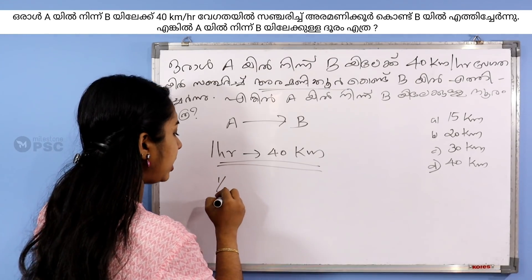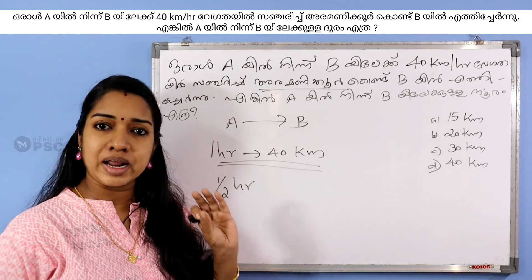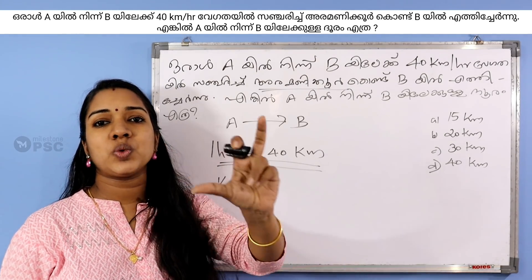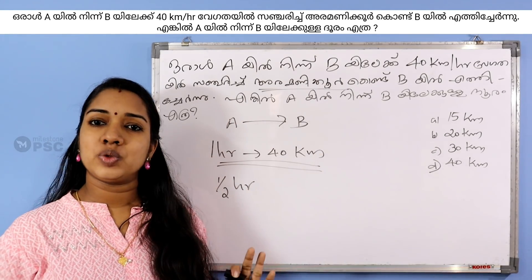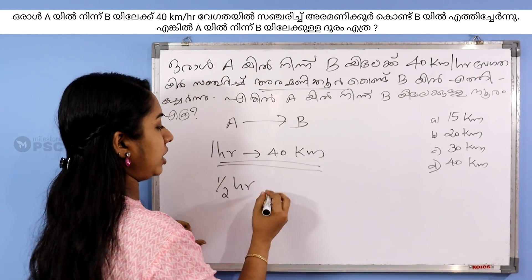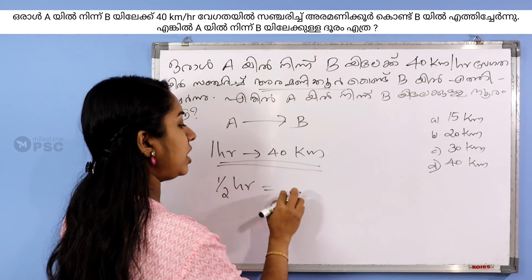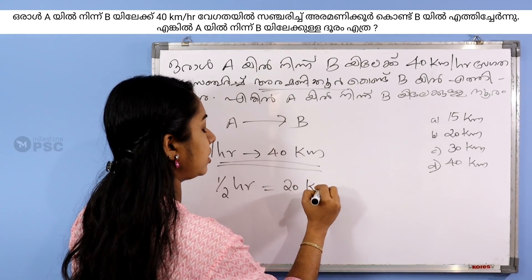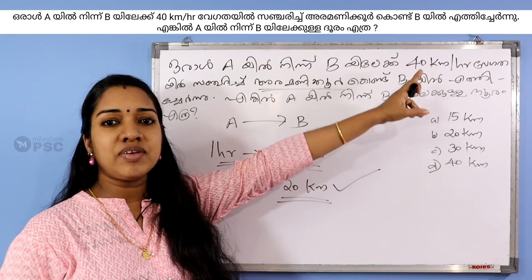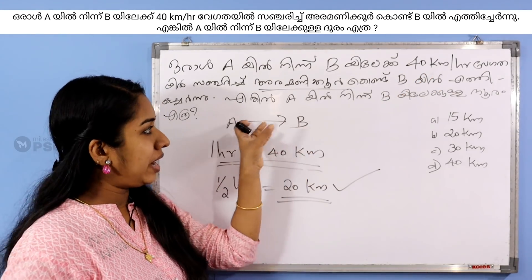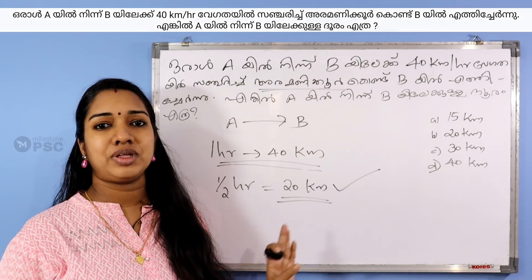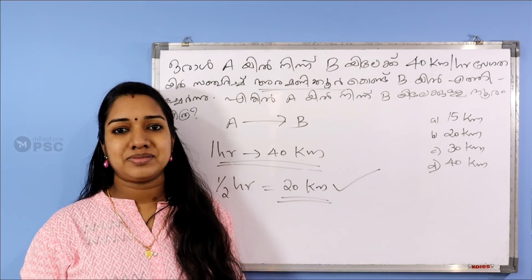But you use B to the same. If you use B to the same, then you use B to the same. In B to the same 40 km, which means that you are taking 40 km to the same. If you have B to the same, then you will find B to the same from around. If you use B to the same, you take half of it to the same. And now we have another question.